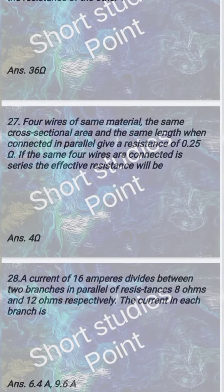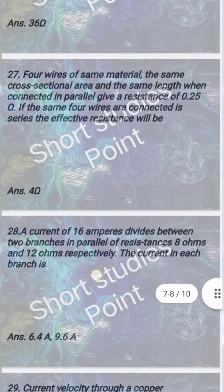Four wires of same material, the same cross-sectional area and the same length when connected in parallel give a resistance of 0.25 ohm. If the same four wires are connected in series, the effective resistance will be 4 ohm.